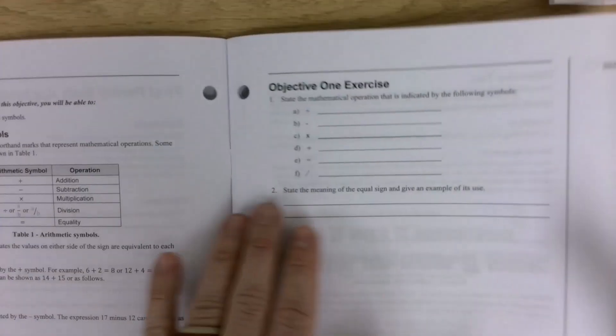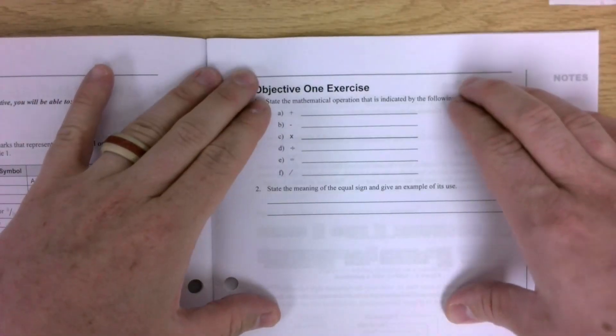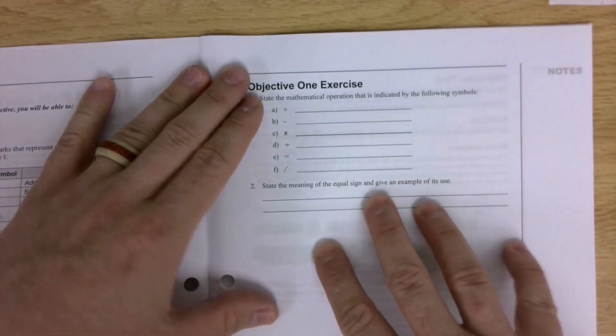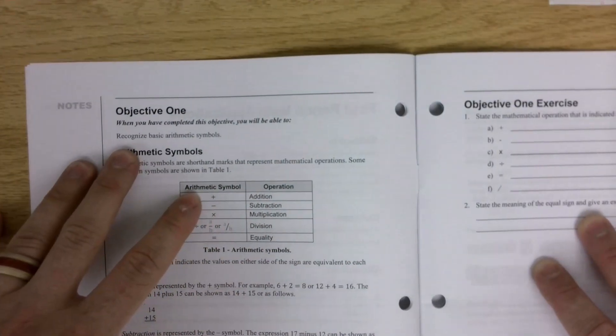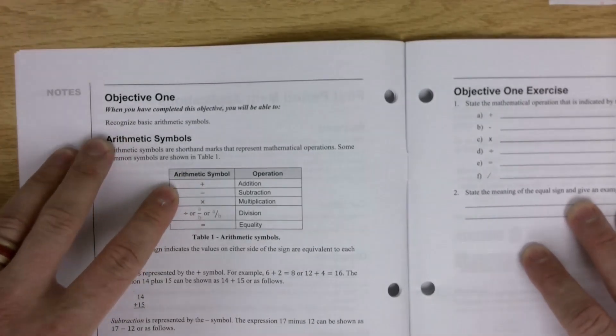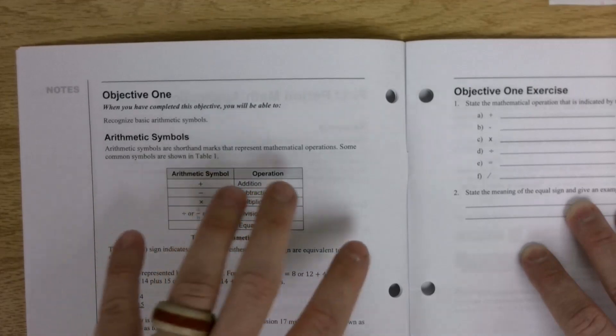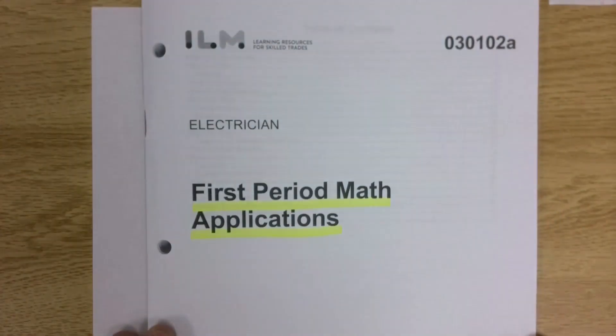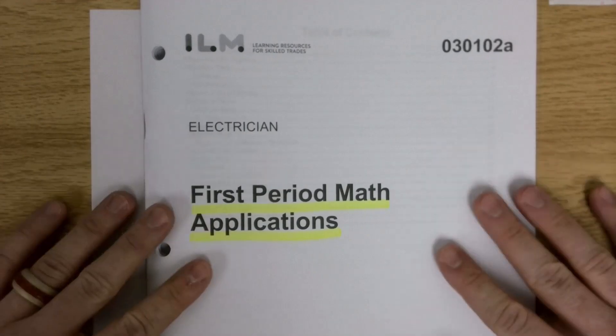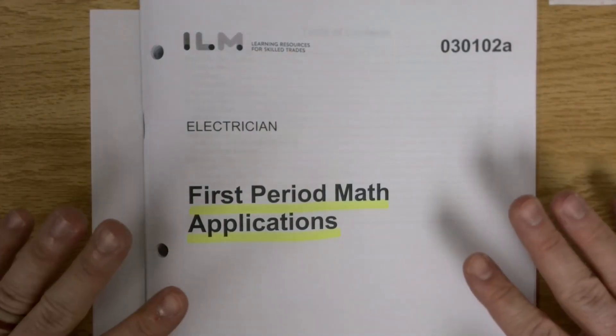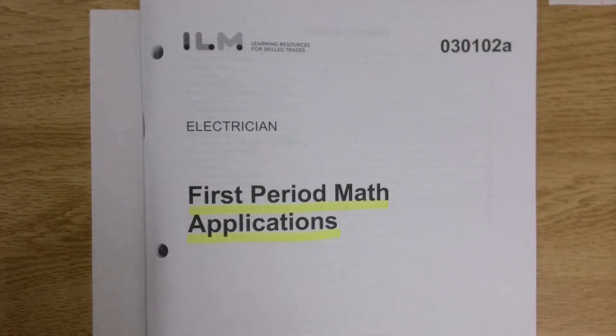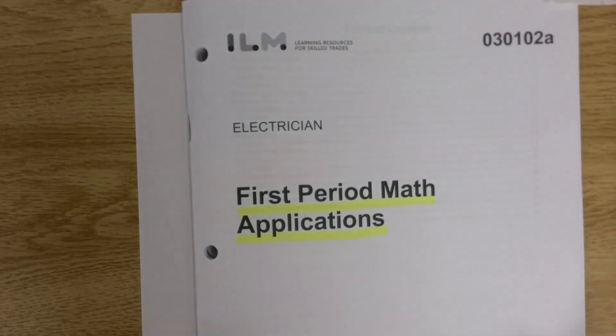I strongly recommend doing all of the questions for each objective, and then going to the back and checking your answers. If you get something wrong, go back to the information, and you should be able to find out where you went wrong. If it doesn't make sense to you, you can always email me, you can call my office, and we can try to sort it out.